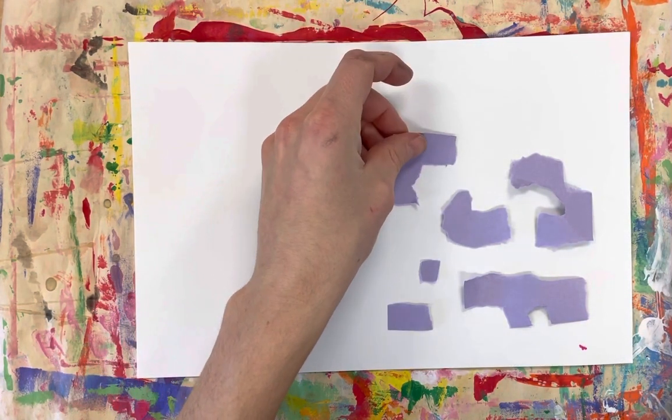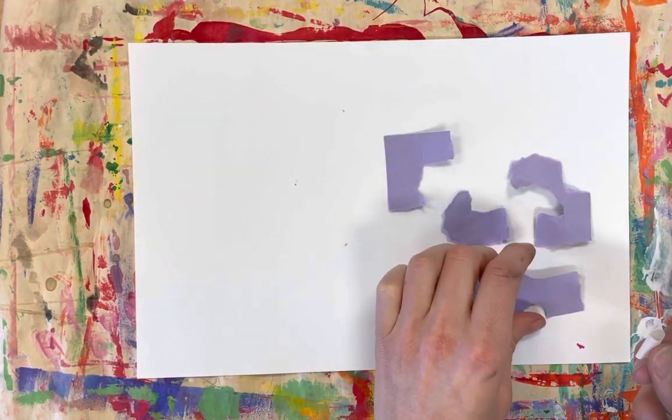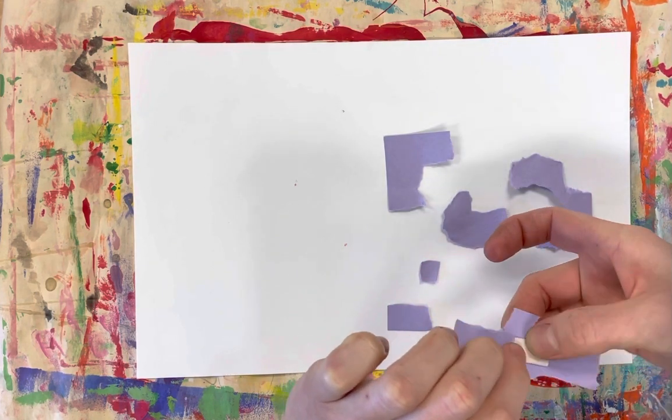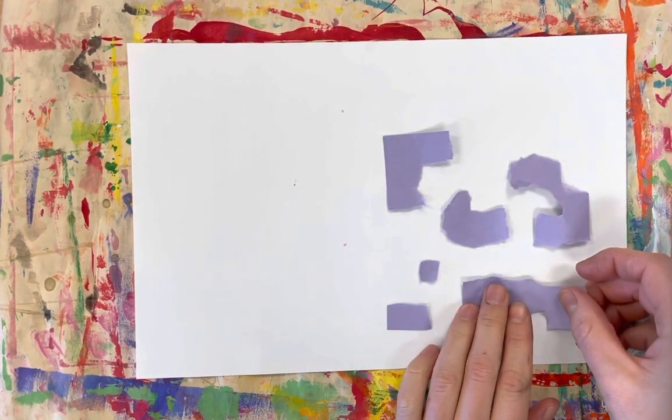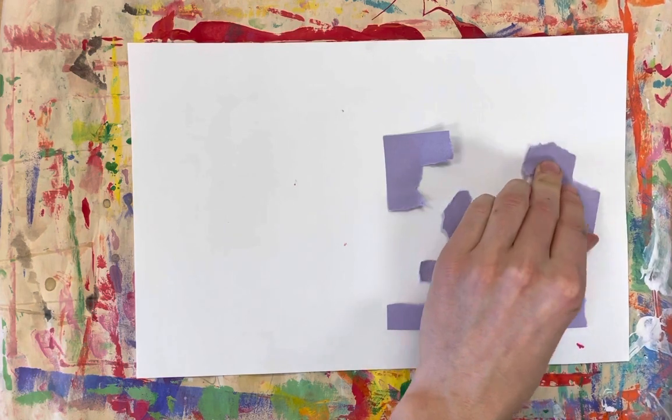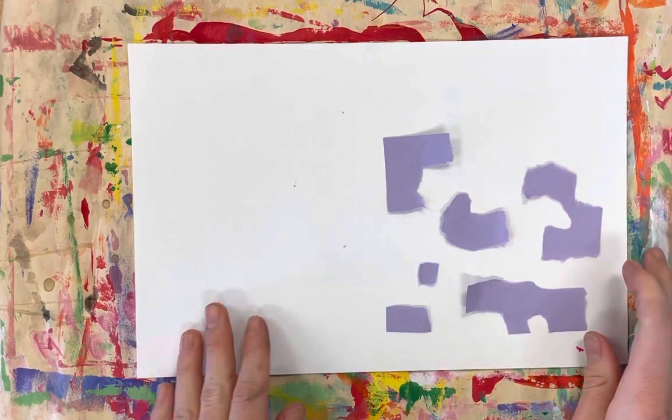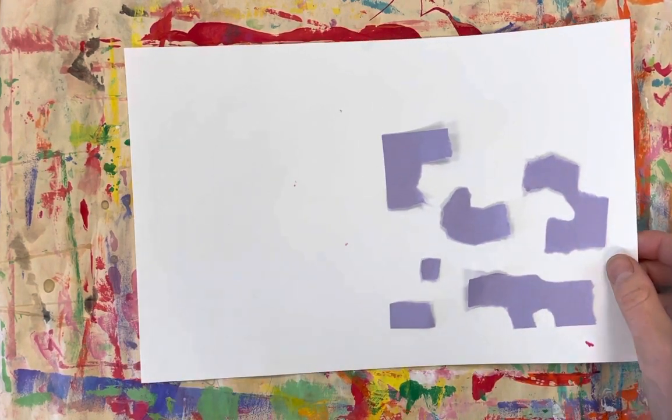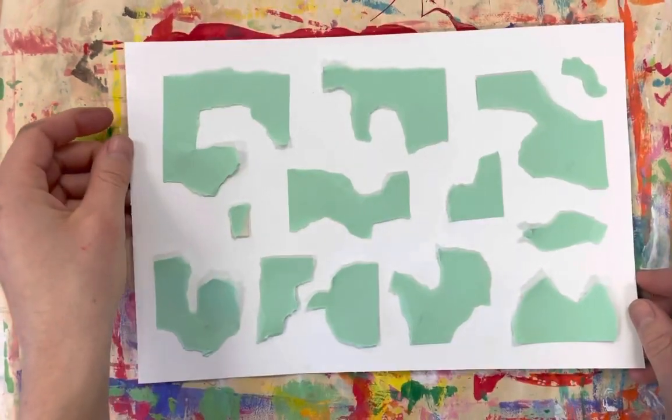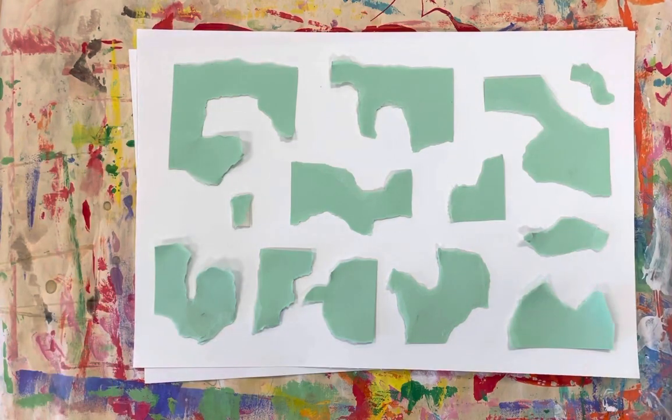Once I have them set, I'll take my tape and I'll place it behind the piece and then set it back down. Now I'm going to do this until my whole paper is filled with my pieces.